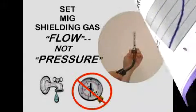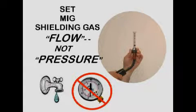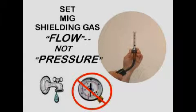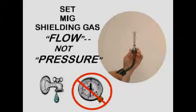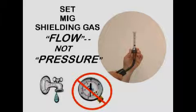Questions are often asked about setting MIG gas pressure. To set the record straight, for MIG and TIG welding, flow rate is set — measured in cubic feet per hour — not pressure, measured in pounds per square inch, abbreviated as PSI.